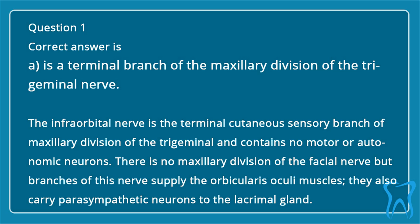The infraorbital nerve is the terminal cutaneous sensory branch of the maxillary division of the trigeminal and contains no motor or autonomic neurons. There is no maxillary division of the facial nerve, but branches of this nerve supply the orbicularis oculi muscles and also carry parasympathetic neurons to the lacrimal gland.